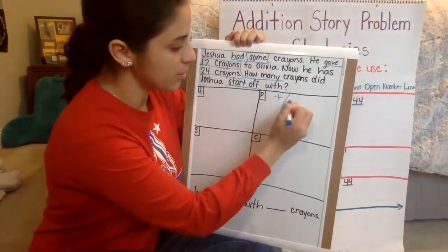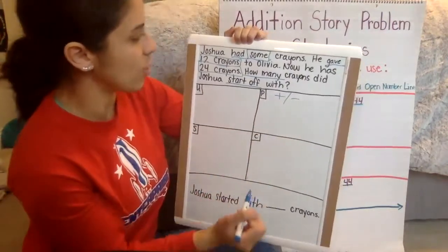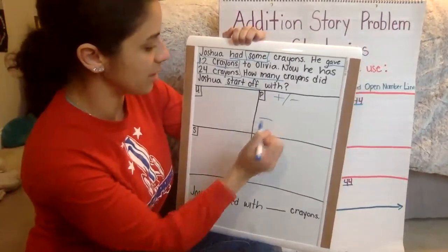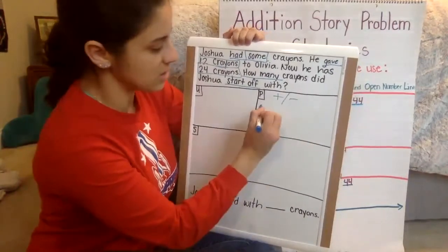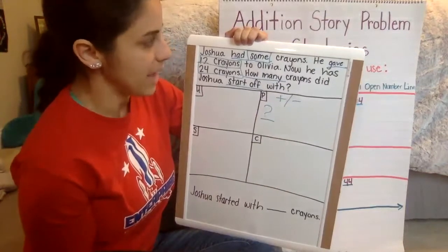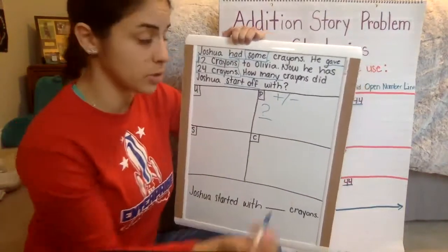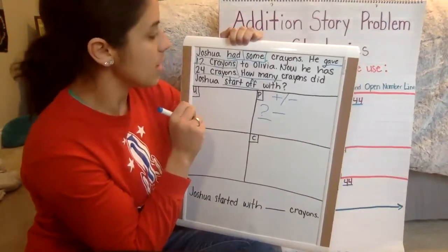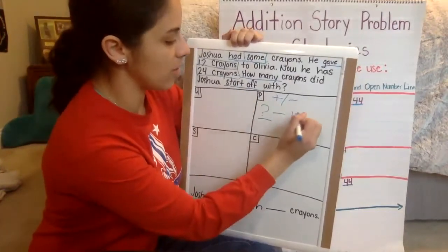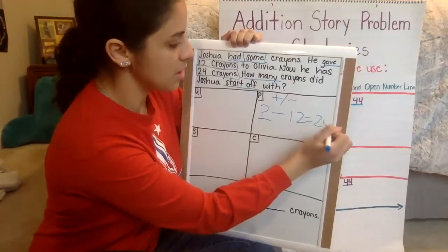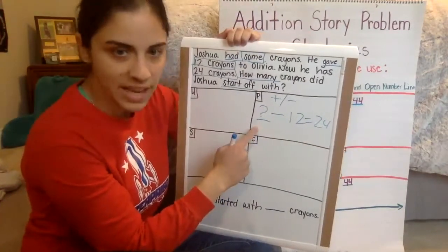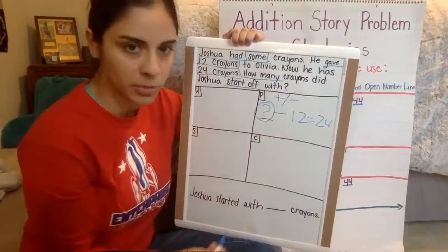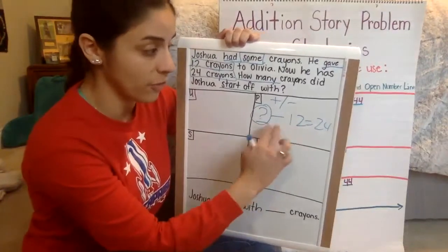Okay. Now plus or minus. So I'm going to write this. He has some. So we don't know how many that is. So that's going to be a question mark. And he's giving away, which means it's a subtraction problem so far. Minus 12 and he has 24 left. But in order for us to find out what this total, what this number is, the missing addend, we have to flip the problem.